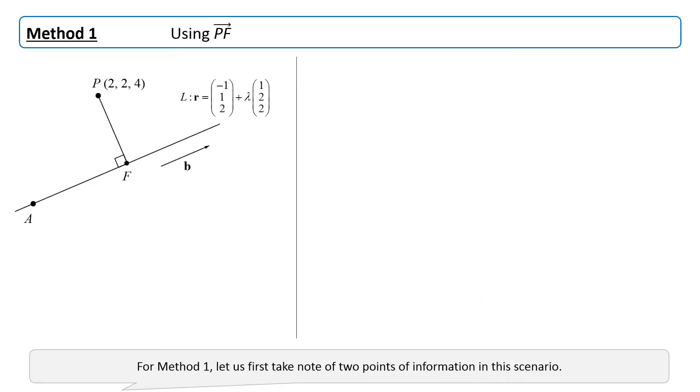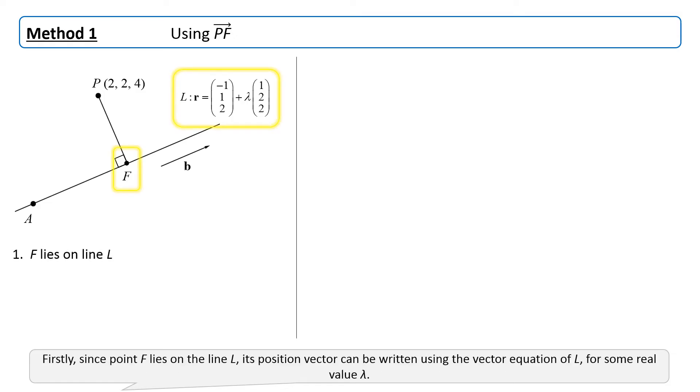For method 1, let us first take note of two points of information in this scenario. Firstly, since point F lies on the line L, its position vector can be written using the vector equation of L, for some real value lambda.